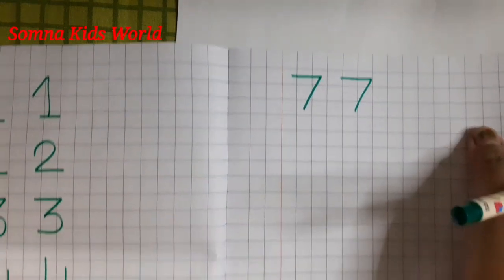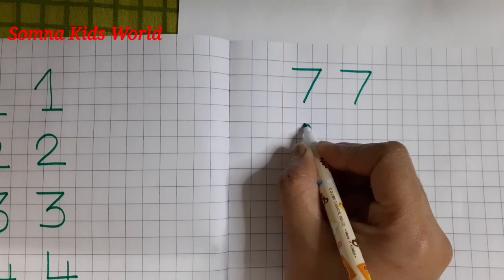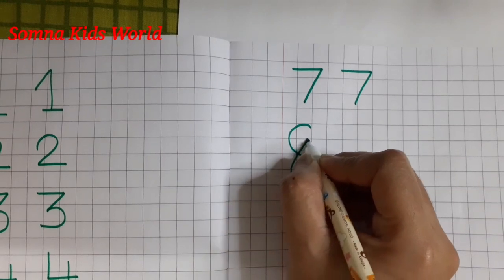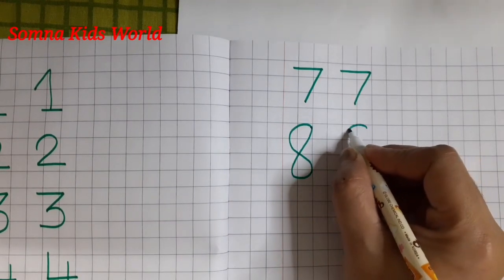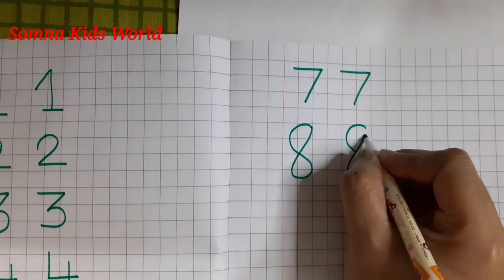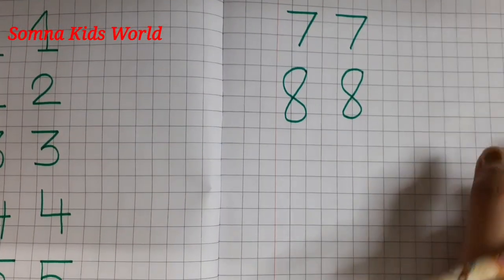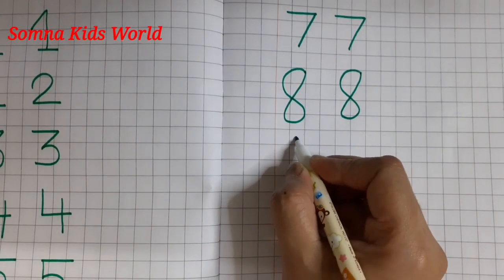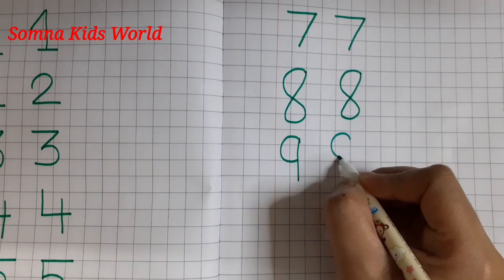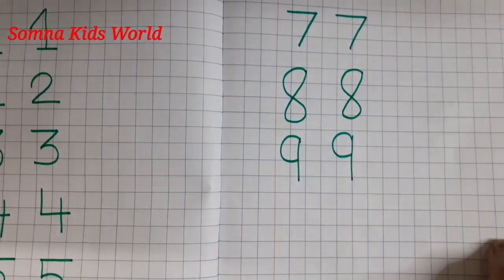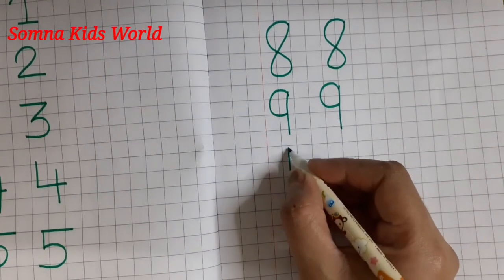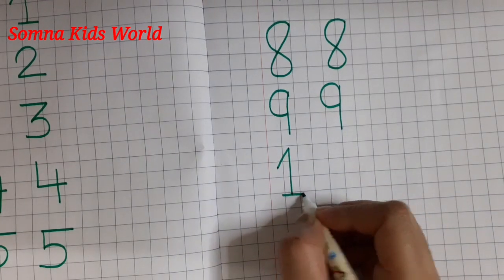Then eight: make a curve, then bring downwards like an S, up, join here. Make a curve, bring downwards like an S, then up and join here. Number nine: make a curve, standing line. Make a curve, standing line. After nine, number ten: standing line, slanting line, slanting line, slanting line.